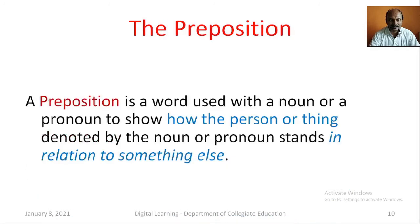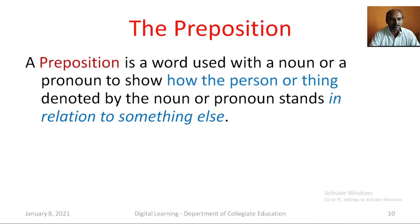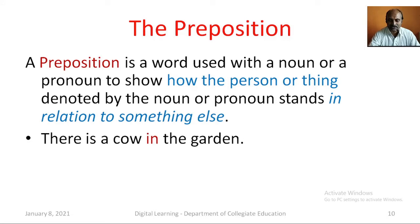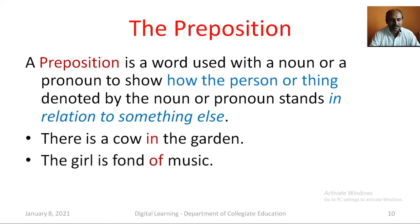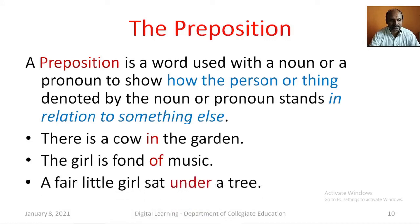The Preposition. A preposition is a word used with a noun or a pronoun to show how the person or thing denoted by the noun or pronoun stands in relation to something else. For example: There is a cow in the garden. The girl is fond of music. A fair little girl sat under a tree. Here, in, of, and under are prepositions.